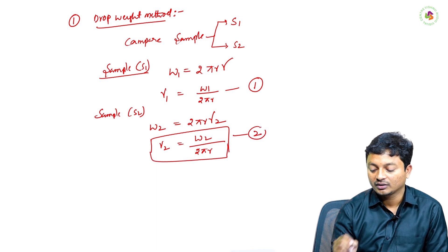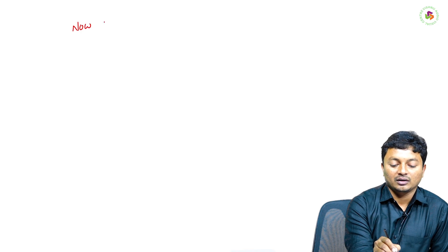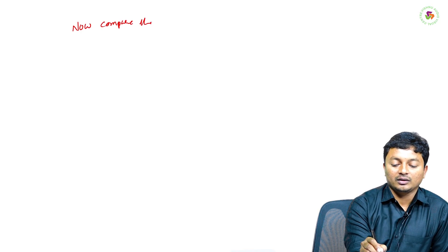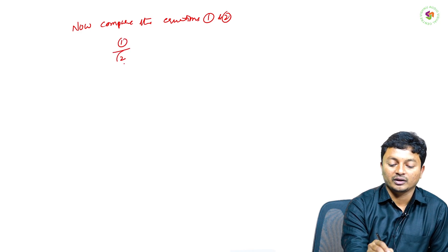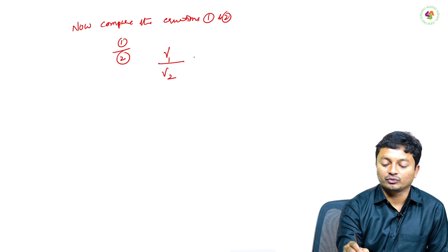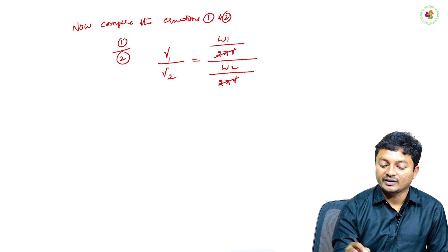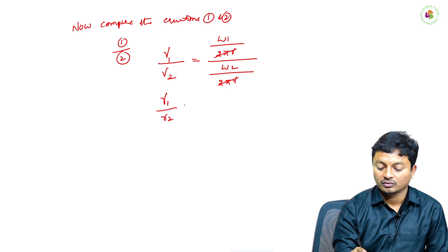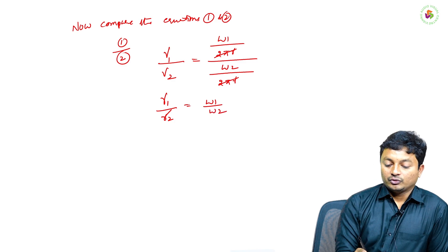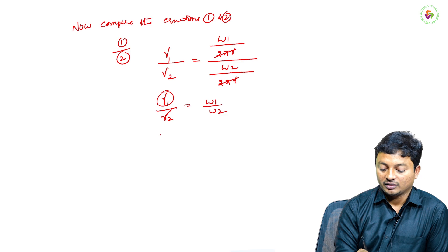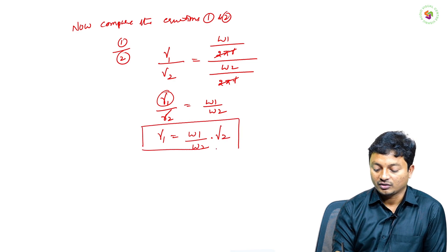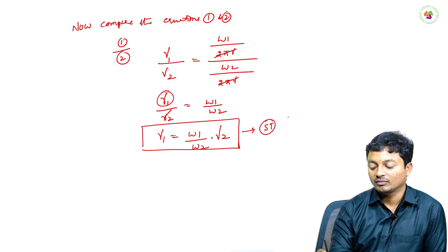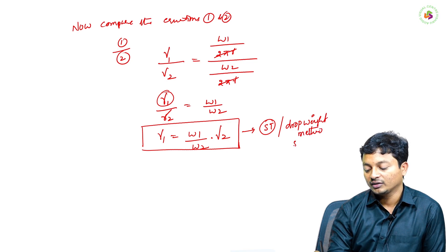Now compare equations 1 and 2. Dividing equation 1 by equation 2: γ₁ / γ₂ = w₁ / w₂, since 2πr cancels. To calculate the surface tension of sample 1: γ₁ = (w₁ / w₂) × γ₂. Based on this equation, we can calculate the surface tension by the drop weight method using the stalagmometer.